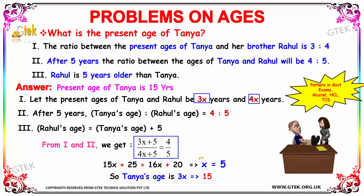Cross multiplying, we get 15x + 25 = 16x + 20, which gives x = 5. If x = 5, then Tanya's age is 3x = 3 × 5 = 15 years. We have found the present age of Tanya using facts 1 and 2.